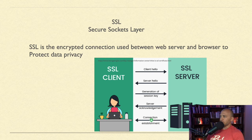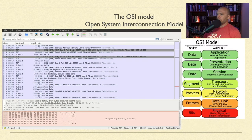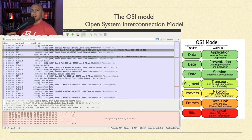The OSI Model — Open System Interconnection model — is something you absolutely need to know for job interviews. You'll also need it to communicate with blue teamers or clients after a penetration test. The seven layers are: Layer 1 – Physical, Layer 2 – Data Link, Layer 3 – Network, Layer 4 – Transport, Layer 5 – Session, Layer 6 – Presentation, and Layer 7 – Application.